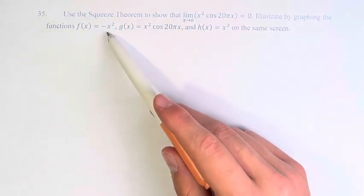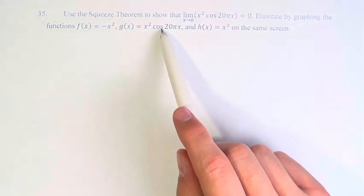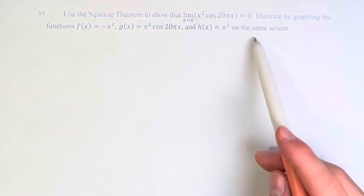And we're going to do this by graphing the functions negative x squared, x squared times cosine of 20π x, and x squared on the same screen.